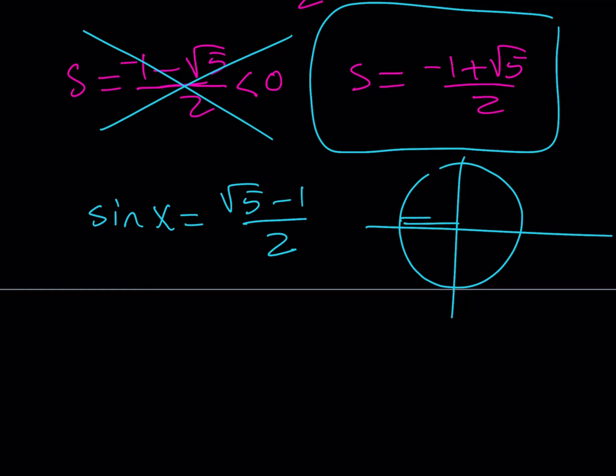How does that help us? First of all I have to inverse sine both sides. How do you find x from here? We don't really have a special angle like 30, 45, 60. So x equals sine inverse of root 5 minus 1 over 2.